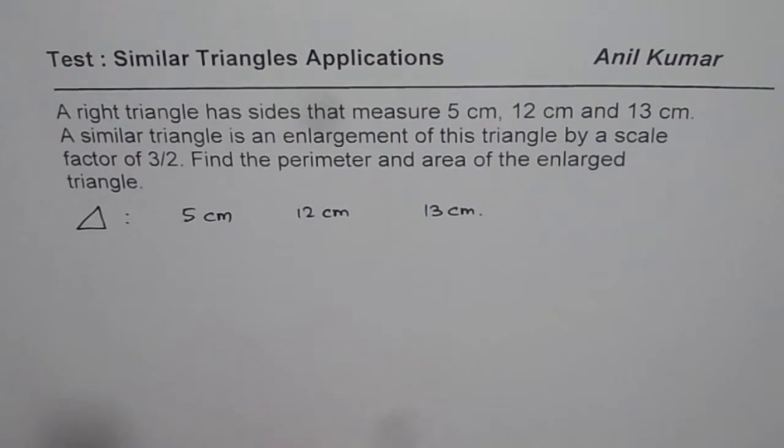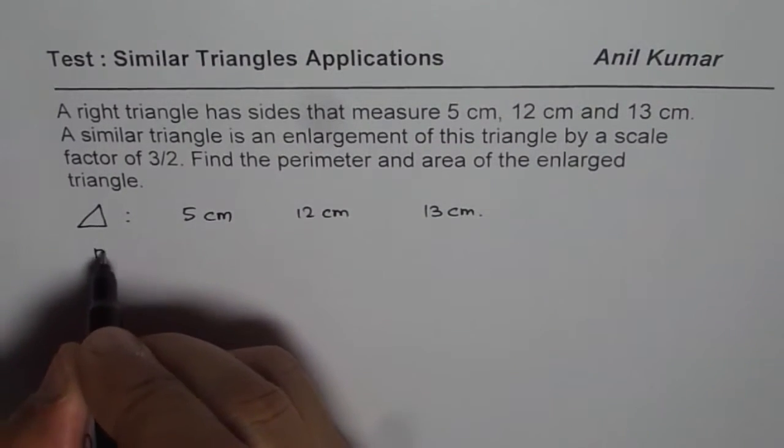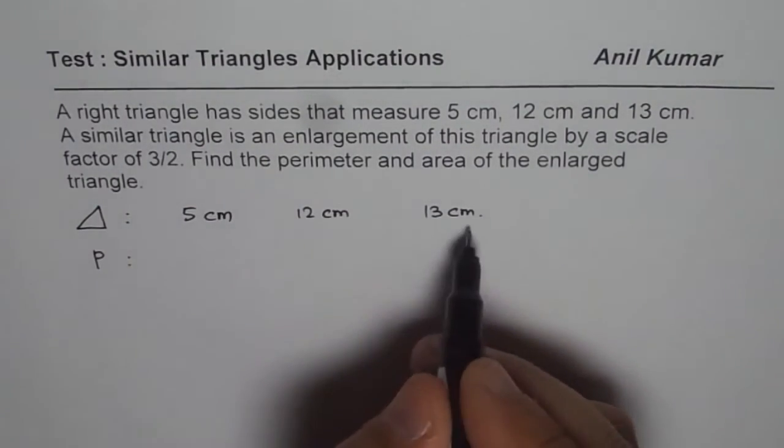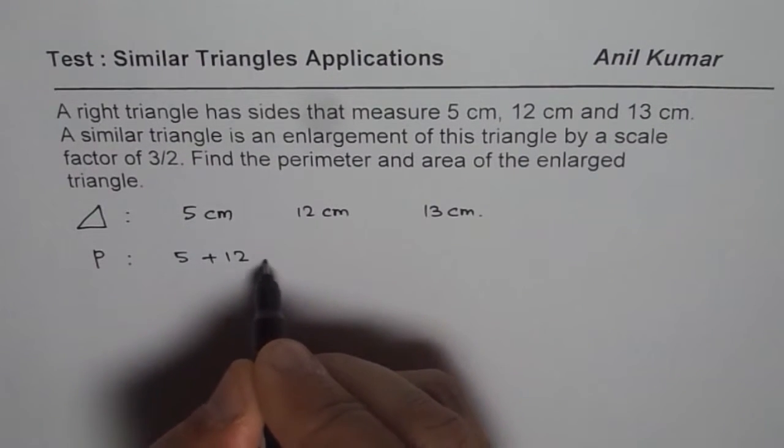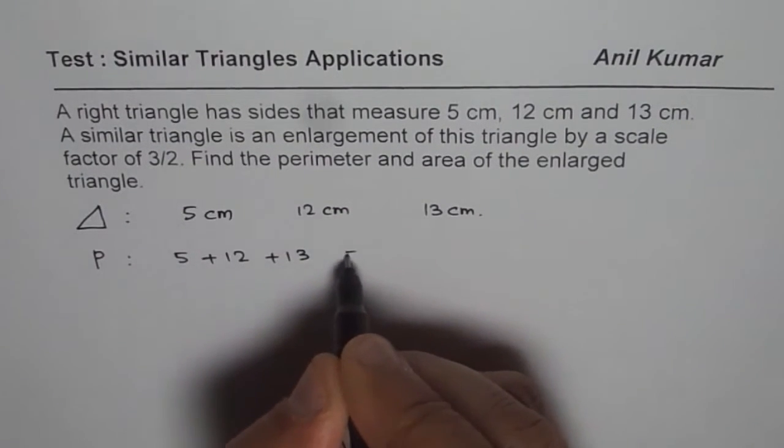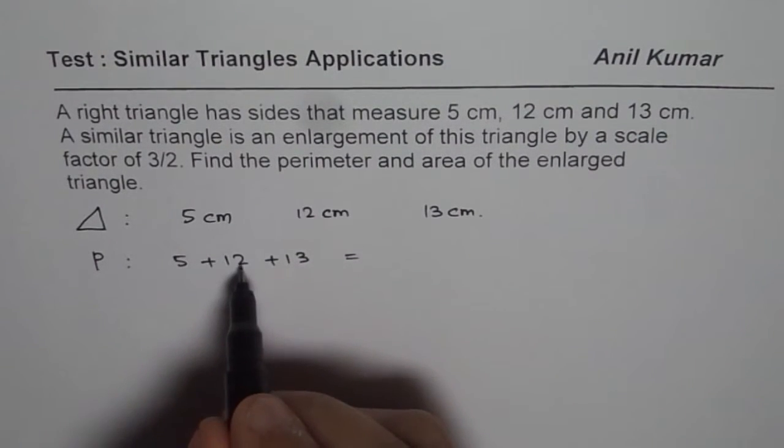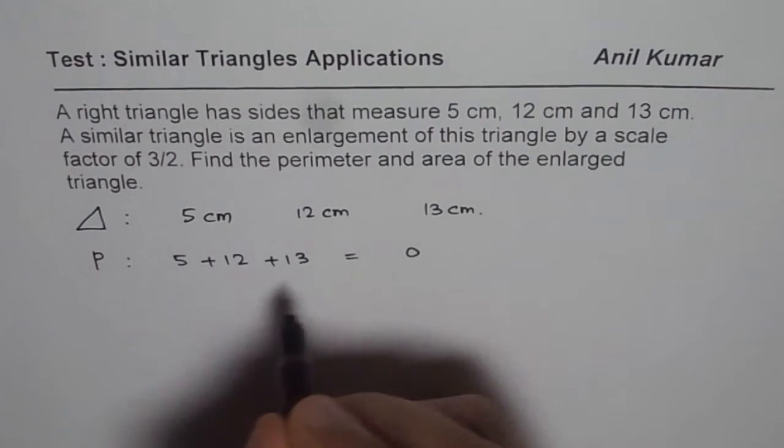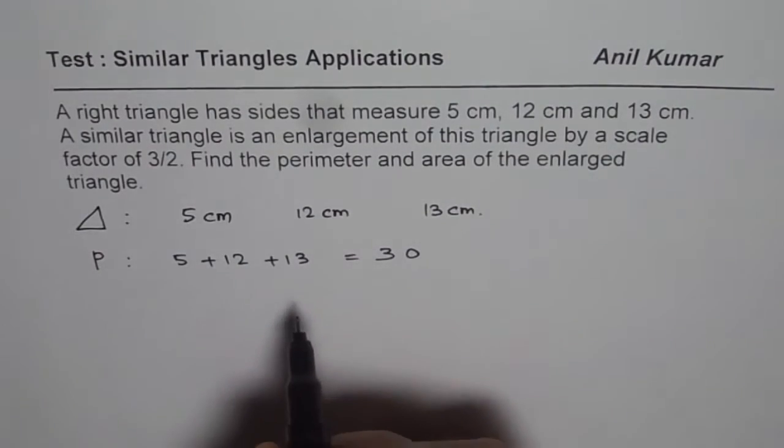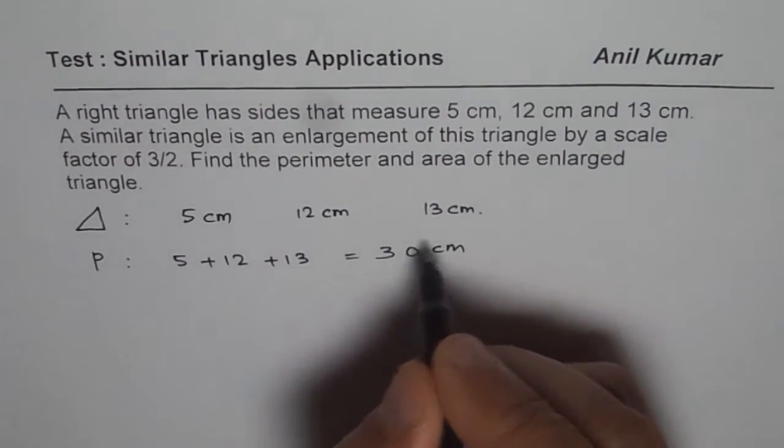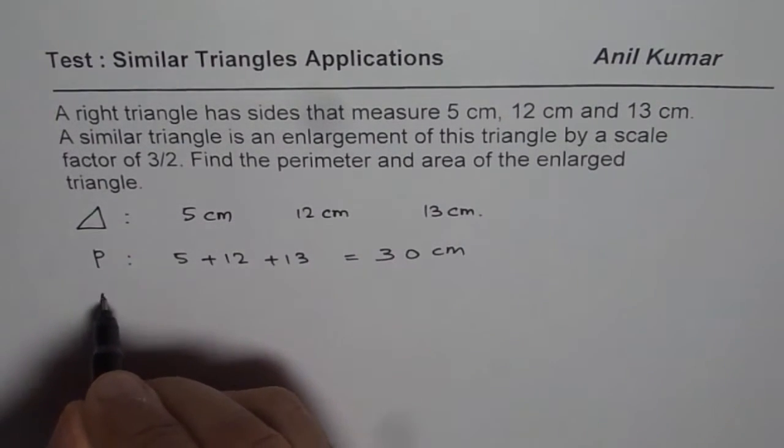So what is the perimeter of this triangle? The perimeter for this triangle is sum of sides. So that would be 5 plus 12 plus 13. So we can calculate this: 3 plus 2, 5 plus 5, 10 and then we get 30.